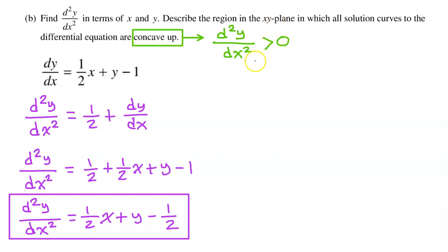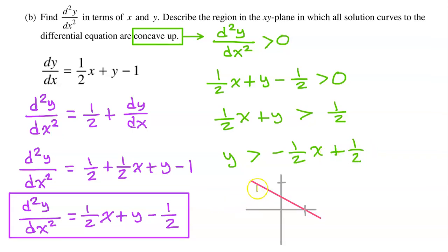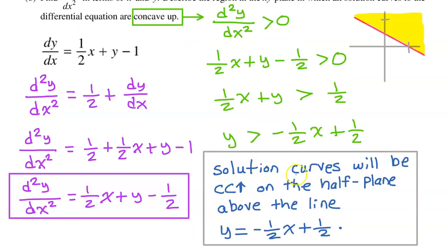The original function is concave up where the second derivative is positive. Setting the second derivative greater than zero and solving for y: adding one-half to both sides gives one-half x plus y greater than one-half, then subtracting one-half x gives y greater than negative one-half x plus one-half. Solution curves are concave up on the half-plane above the line y equals negative one-half x plus one-half.